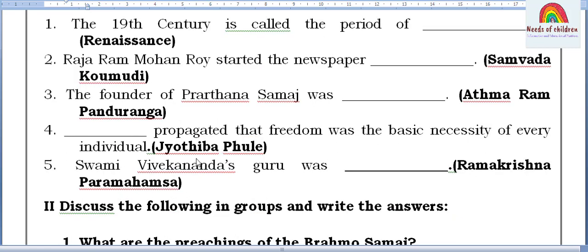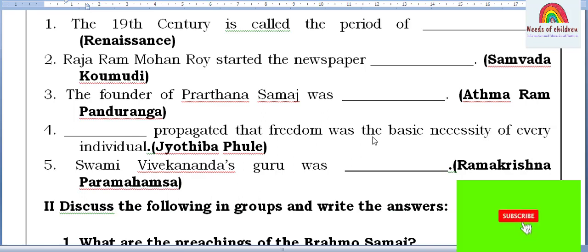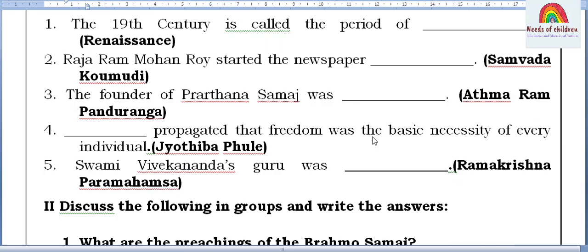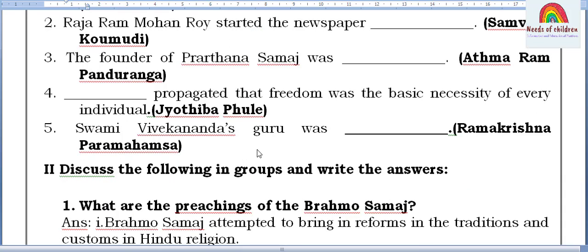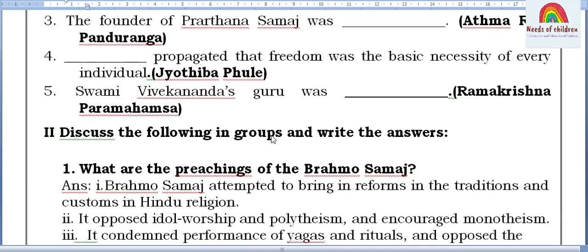Fourth: Jyotiba Phule propagated that freedom was the basic necessity of every individual. Fifth: Swami Vivekananda's guru was Ramakrishna Paramahamsa. So let's move on to the second part: discuss the following in groups and write the answer.